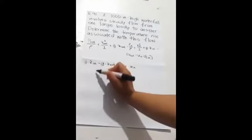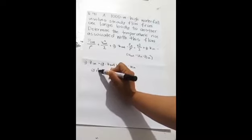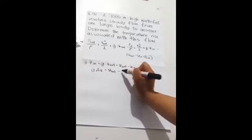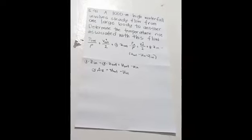So next we have G times change of Z is equal to U out minus U in. The internal energy according to thermodynamics can be determined as the product of the temperature in Kelvin and the specific heat capacity of the water.